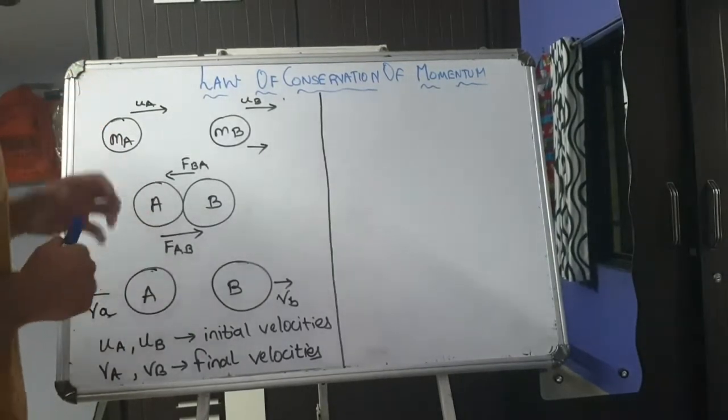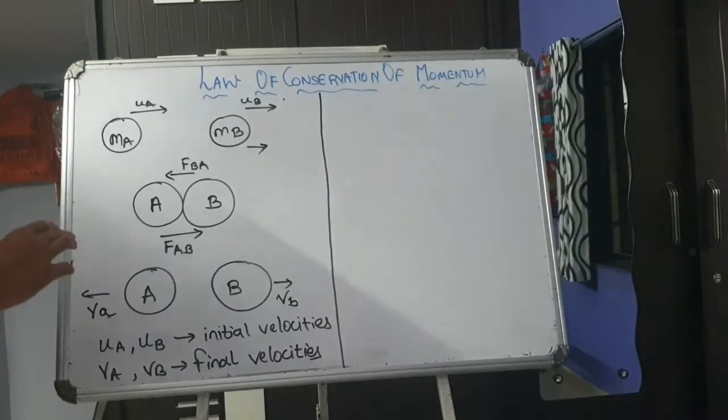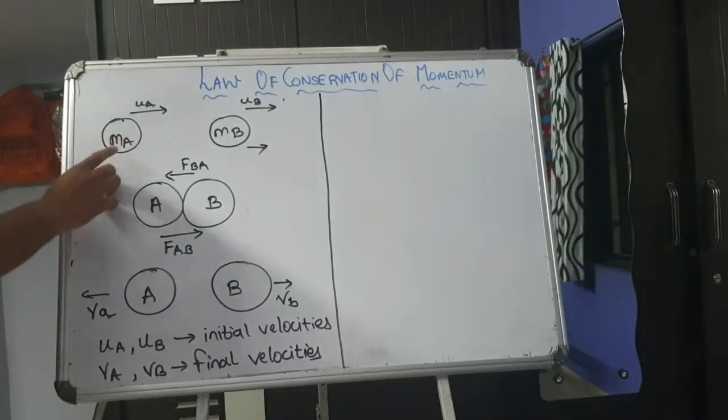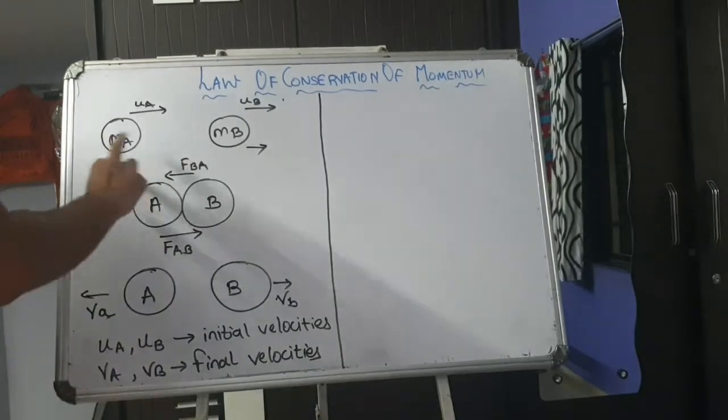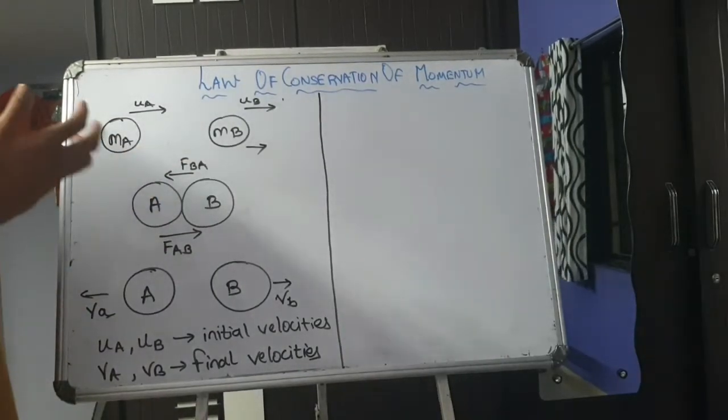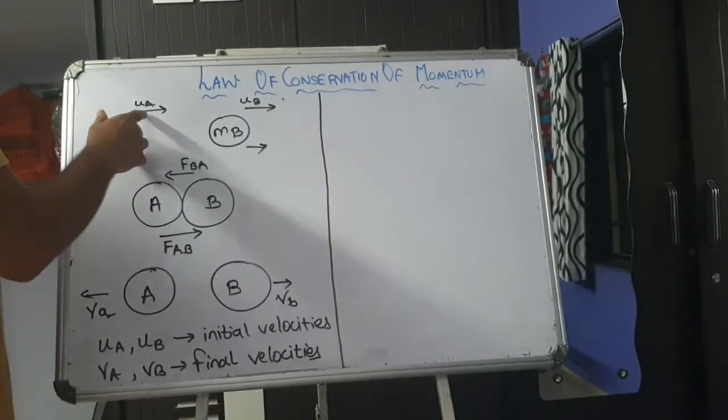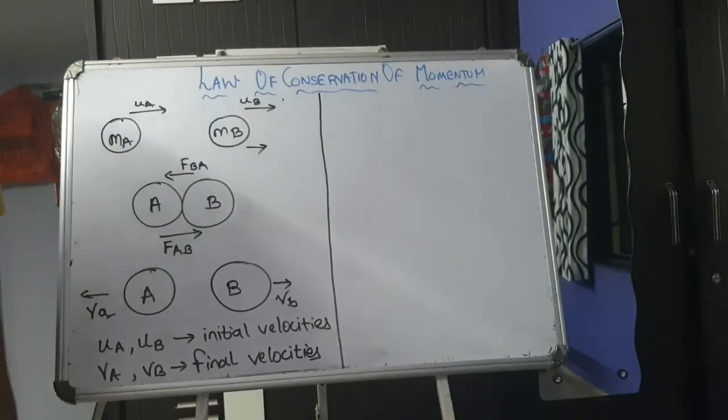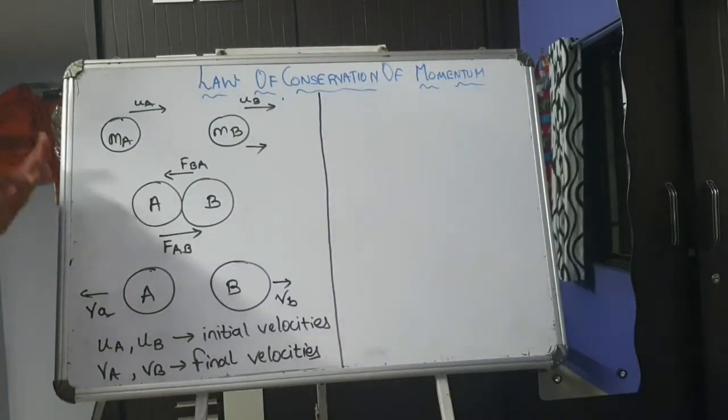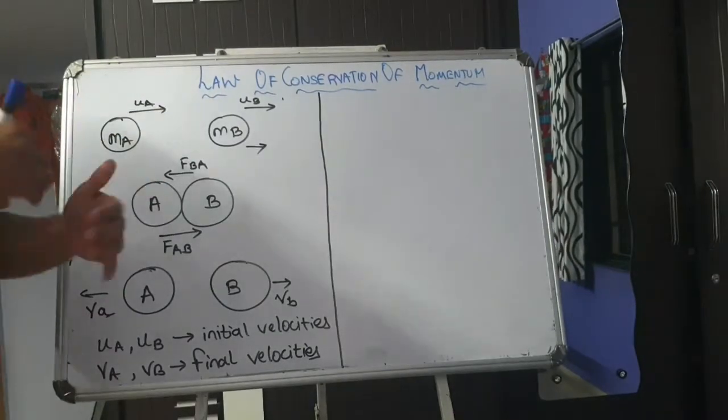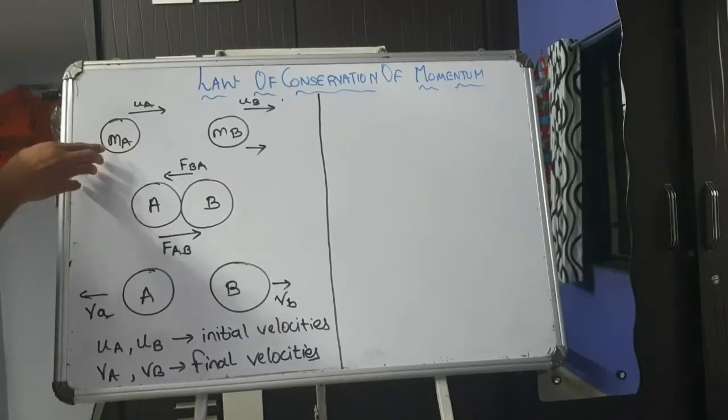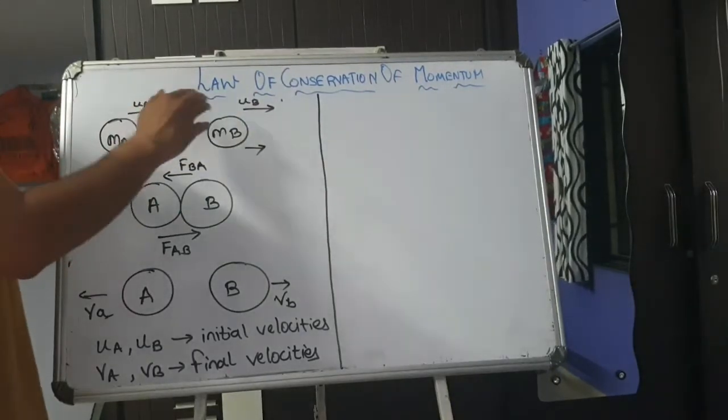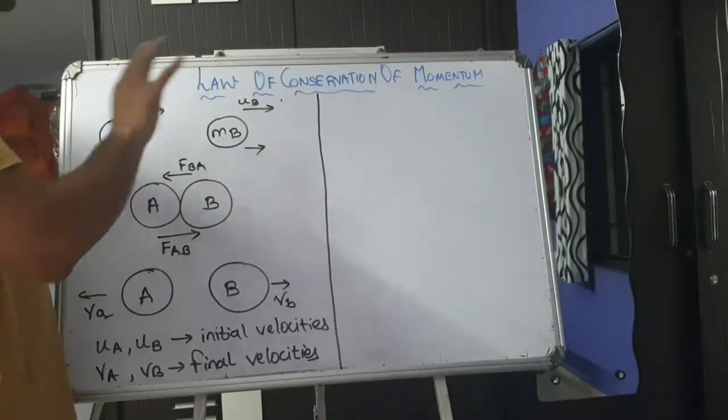For this, I have taken the diagram from textbook. There are two balls with mass mA and mass mB. These two balls have their own initial velocity, let's consider uA and uB. So these balls are rolling. This ball A is rolling to the right side and mB is also rolling to the left side.